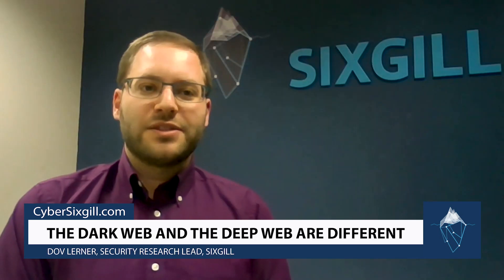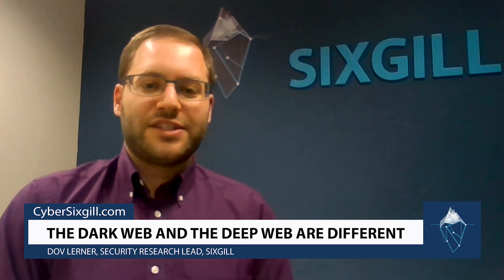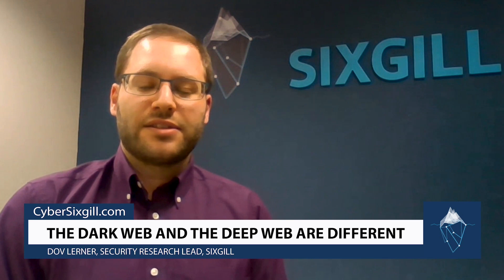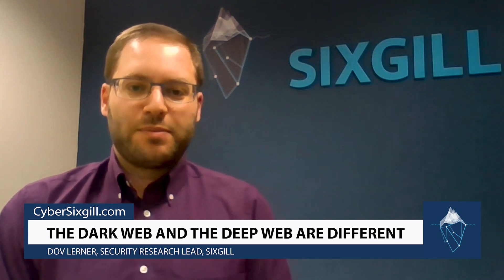So what's the difference then between the dark web and the deep web? Every website on the dark web ends with dot onion — that onion again for the Onion Router. And the websites are just normal websites that are accessed through this special browser.